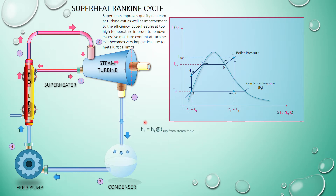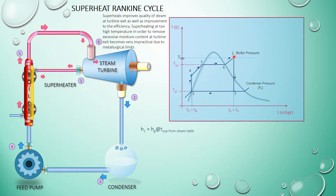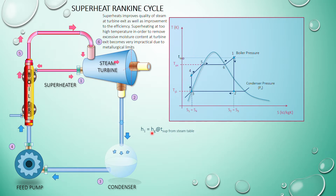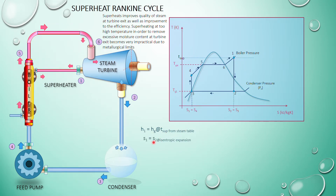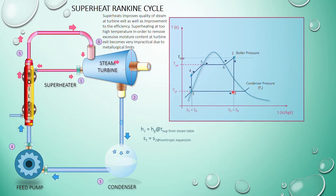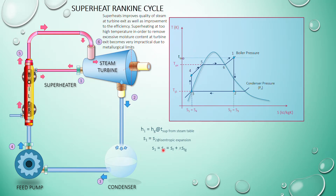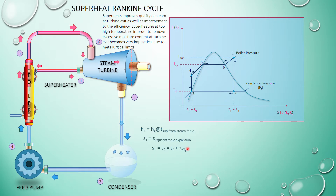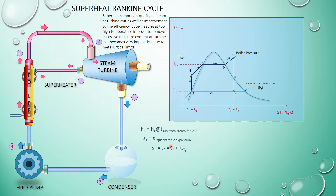From the property table, h1 equals hg at the superheated temperature and boiler pressure. Then find s1, which equals s2, representing the isentropic expansion. So s1 should equal s2, but s2 is sitting on the condenser pressure line. Use s1 (or s2) to find the dryness fraction x using sf and sfg values, which you look up in the property table based on the condenser pressure.